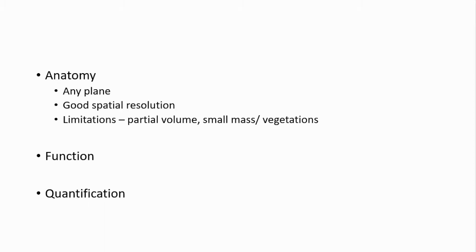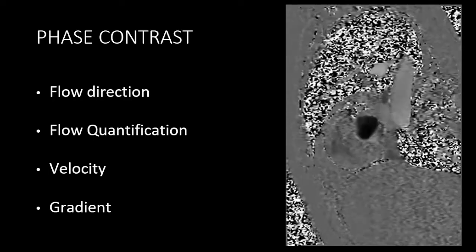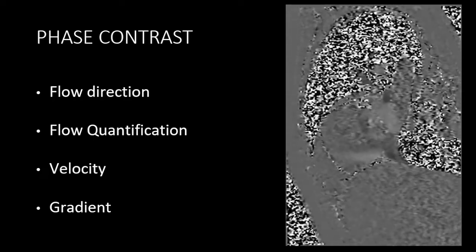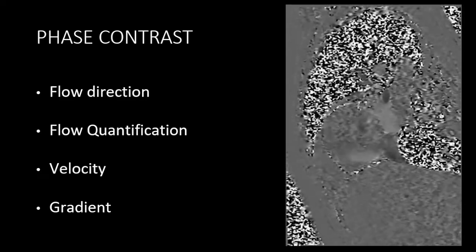Another problem is that we may not see small masses or vegetations on valves. One way to avoid this is to take multiple slices perpendicular to the plane of the valve. For quantification of valvular heart disease, one approach is to use phase contrast imaging across the valvular lesion, which gives flow direction, quantification, and velocity that can help in calculating the gradient.